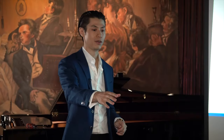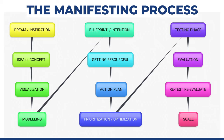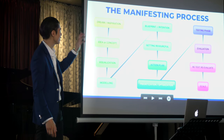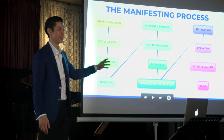So here's the manifesting process. It's a 12-step process and it goes like this: dreams, inspiration, idea, concept, visualization, modeling, blueprint, intention, getting resourceful, action plan, prioritization, optimization, testing phase, evaluation, retest, evaluate, and scale.